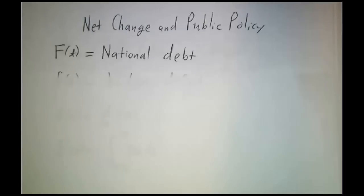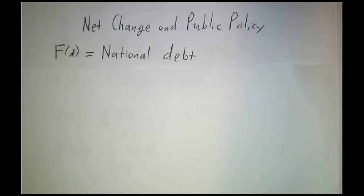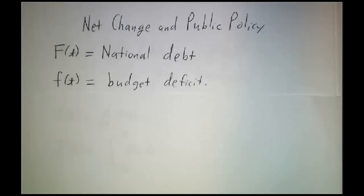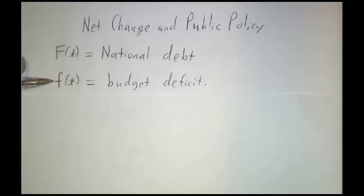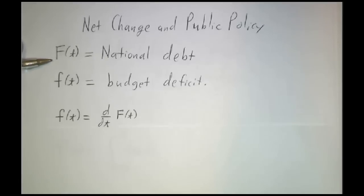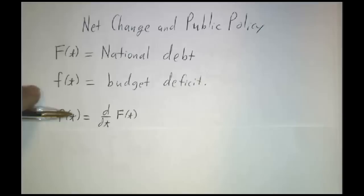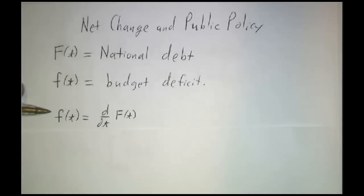In particular, these days a hot issue is the national debt and the federal budget deficit. The question is, how are they related? Well, the debt goes up or down depending on whether we run a deficit or not. The rate at which the debt is increasing is the budget deficit.